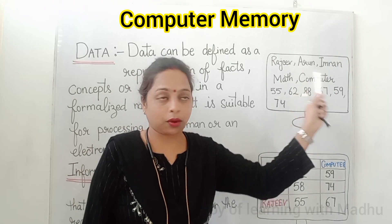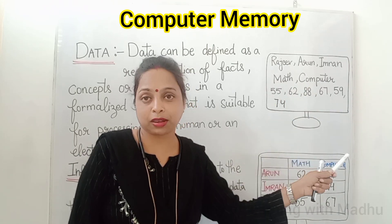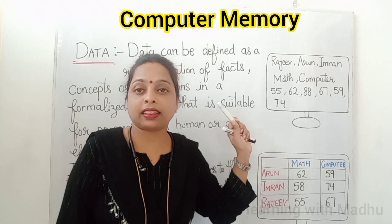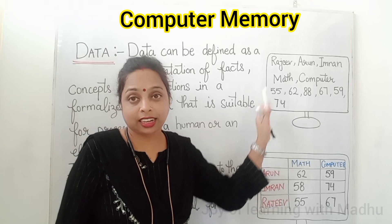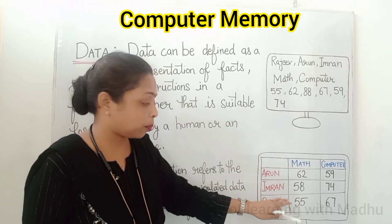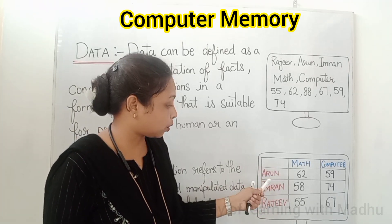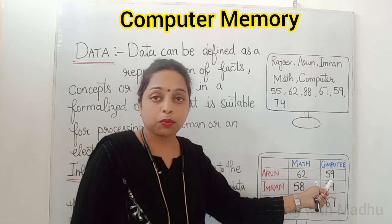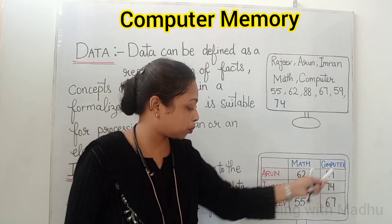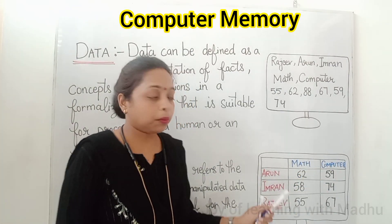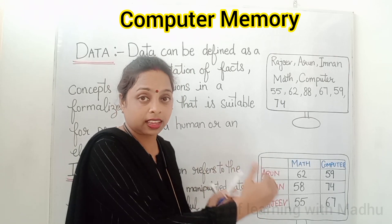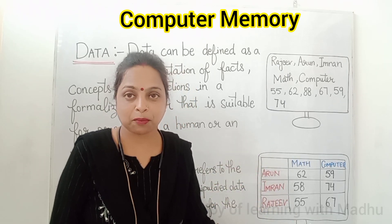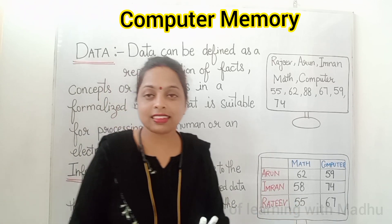When we save this data and organize it into a good form — for example, Arun has got 62 in Maths and 59 in Computer; Imran has 58 in Maths and 74 in Computer; Rajiv has 55 in Maths and 67 in Computer — we have formalized and manipulated it into a good form. This is called information.